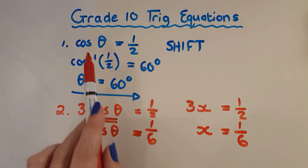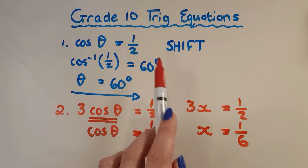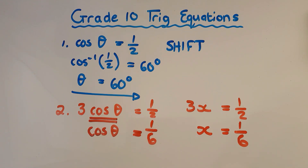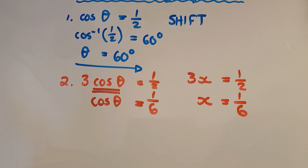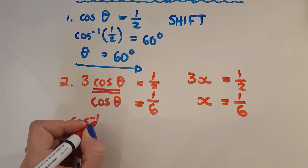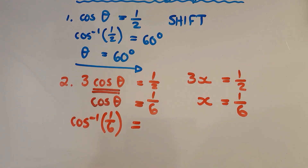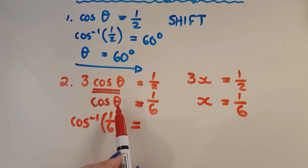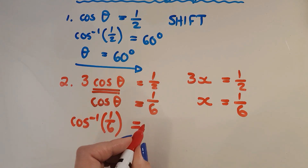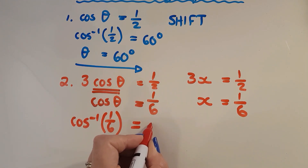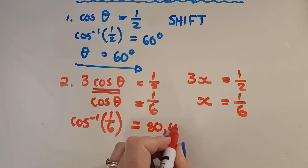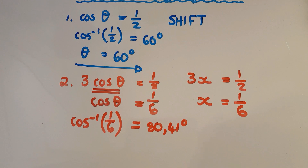Now it looks just like the first example, except instead of cos theta equals a half it's cos theta equals 1 over 6. So what I need to do is shift cos the 1 over 6. I write cos to the negative one of 1 over 6 and I get an answer telling me the angle. Running to two decimal places, I get 80.41 degrees, which means theta equals 80.41 degrees.